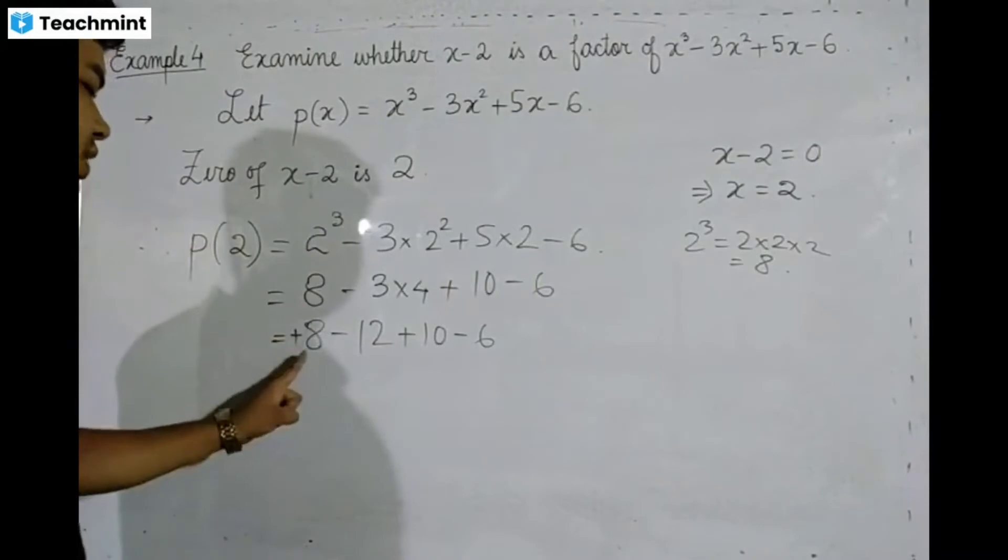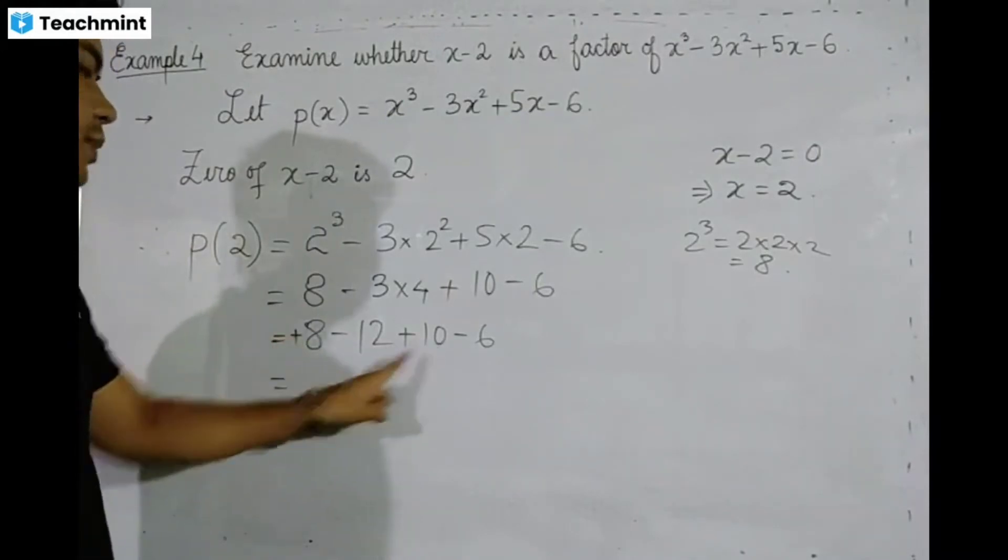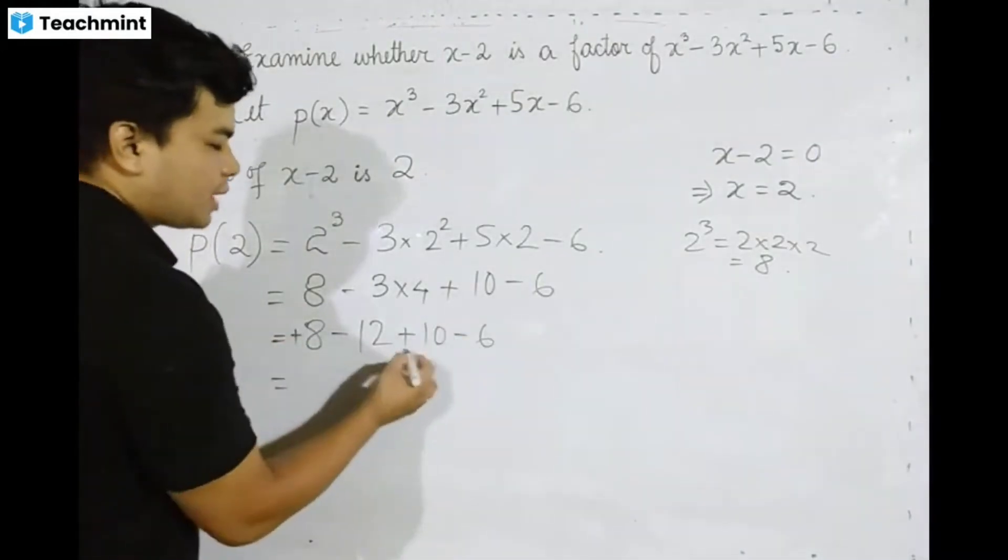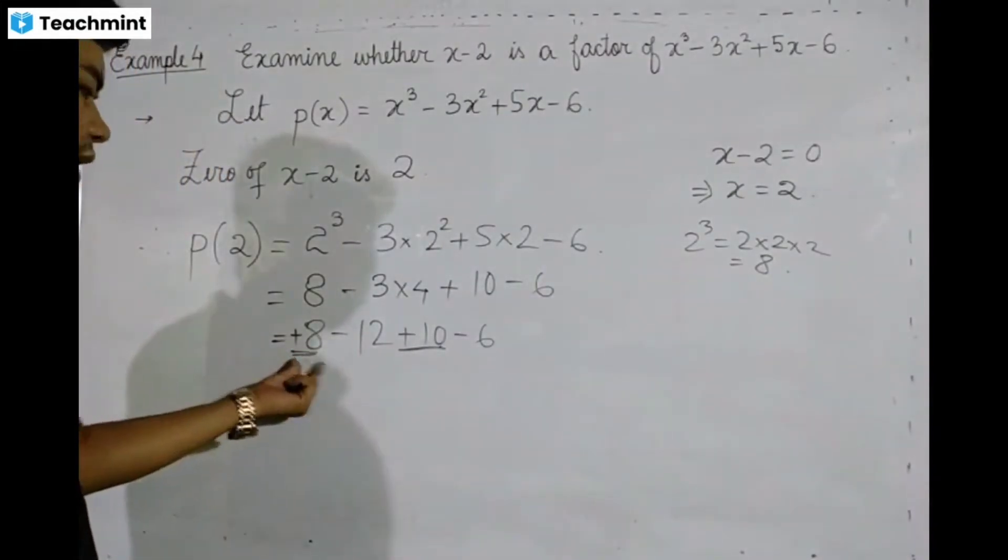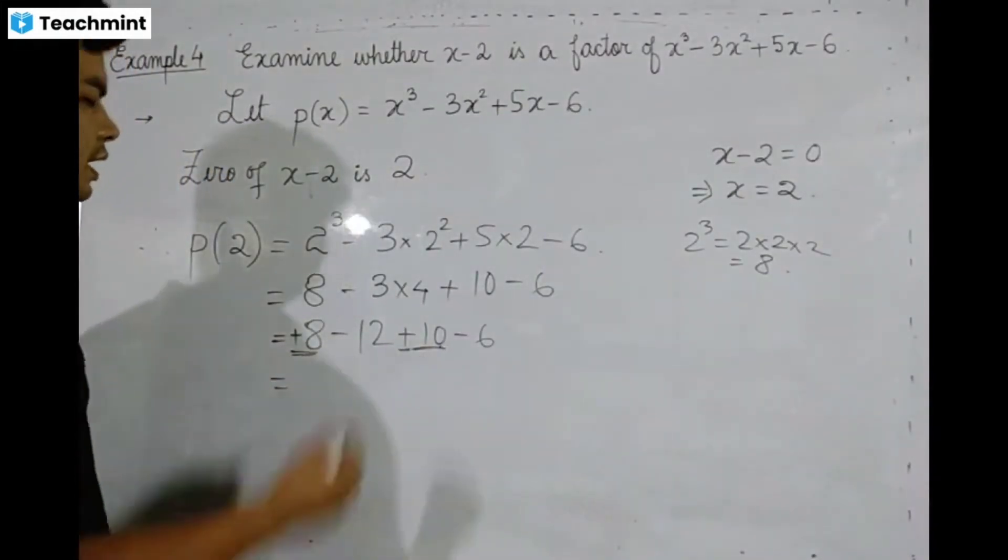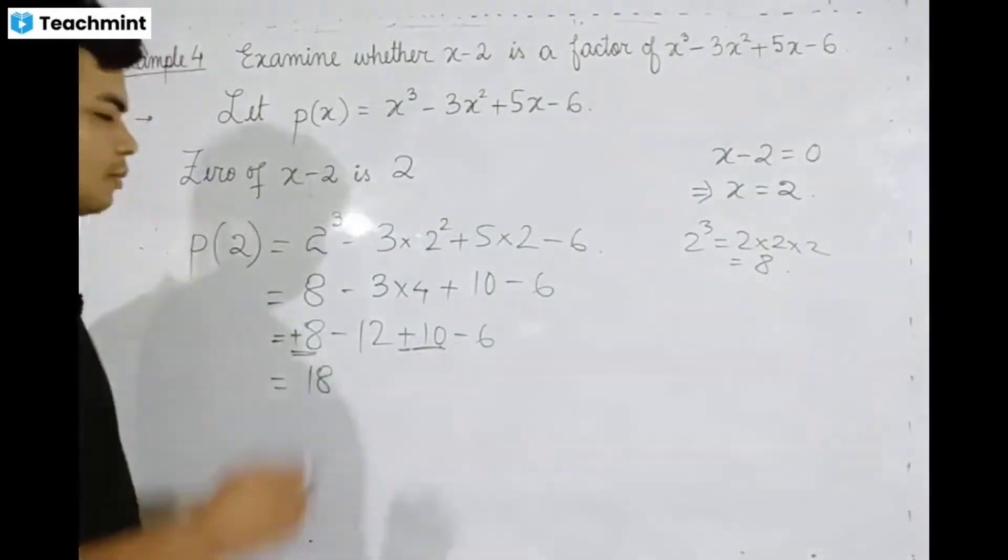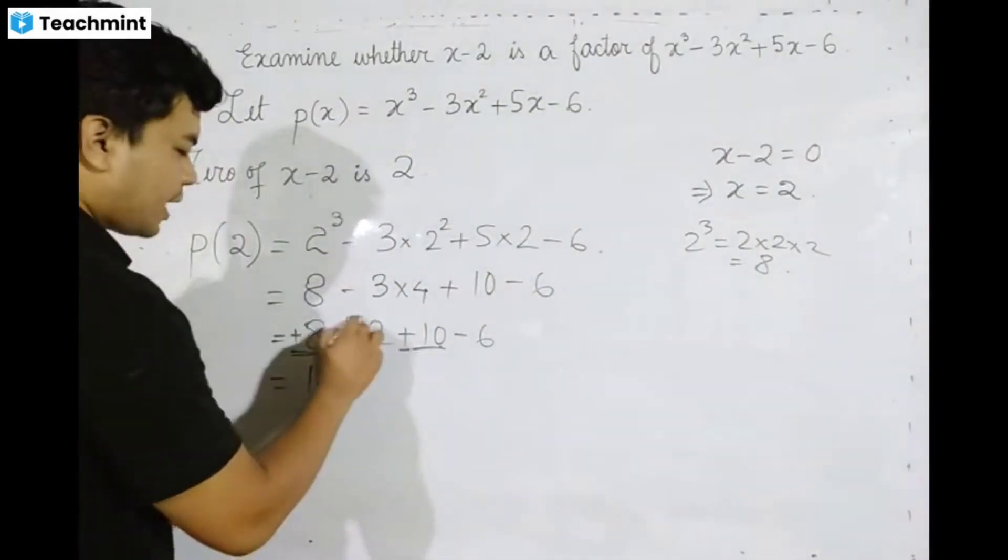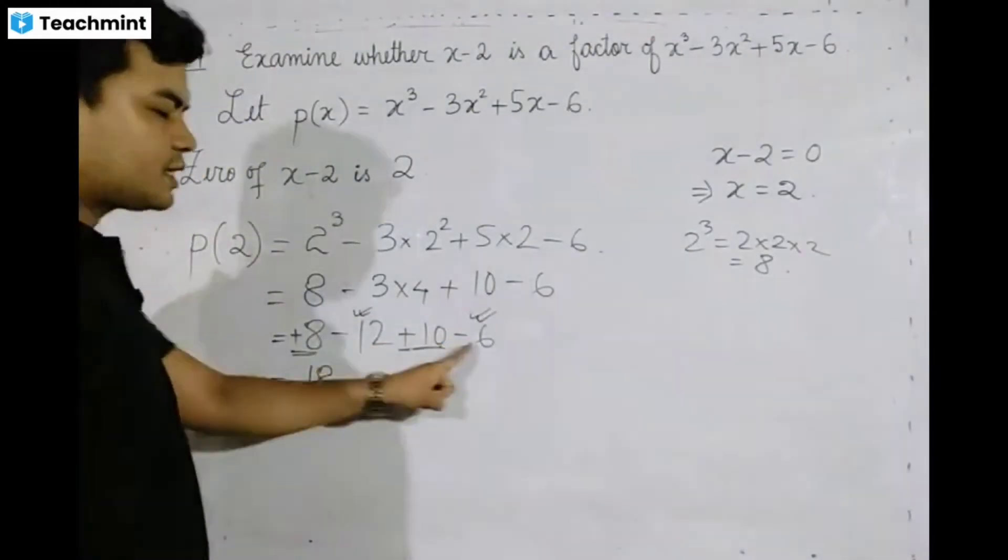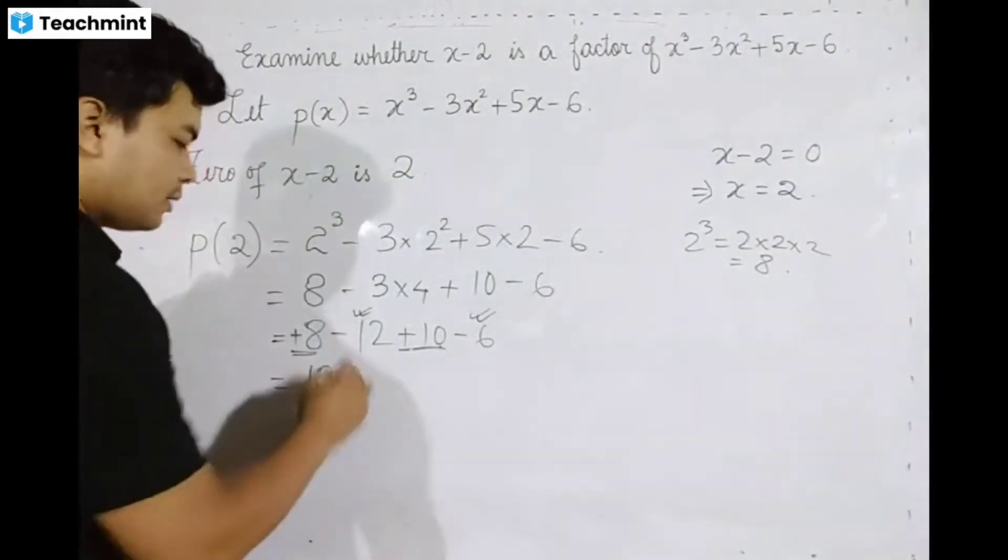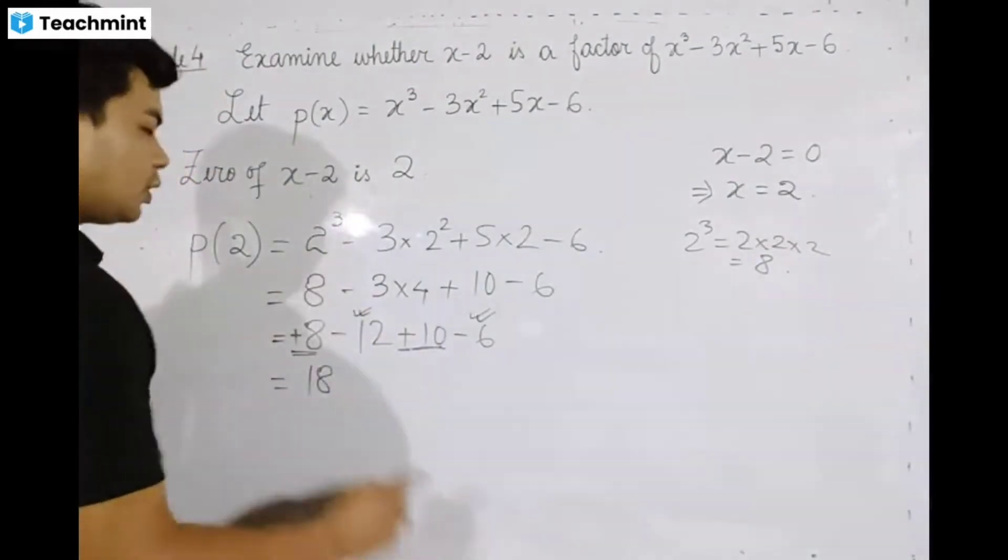8 plus 10 equals 18. Then 18 minus 4 minus 6 equals 18 minus 10, which equals 8.